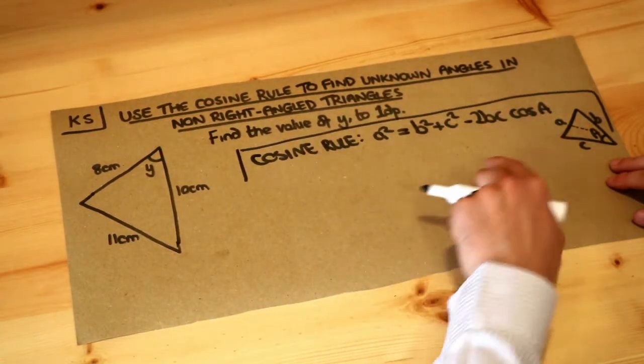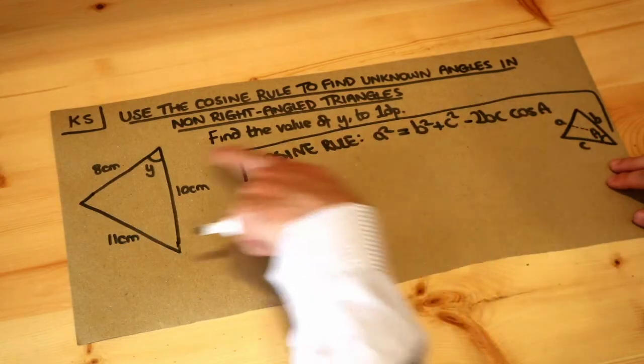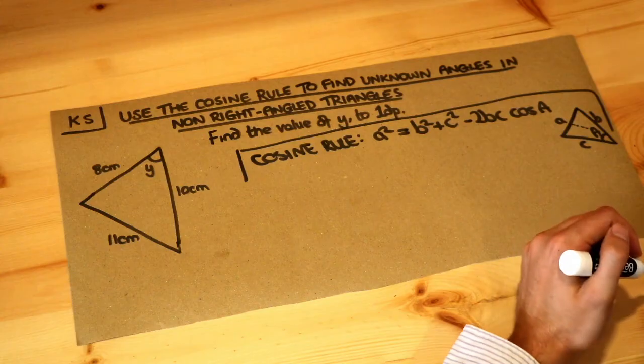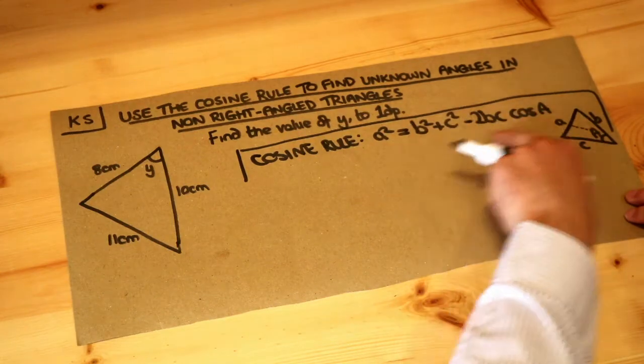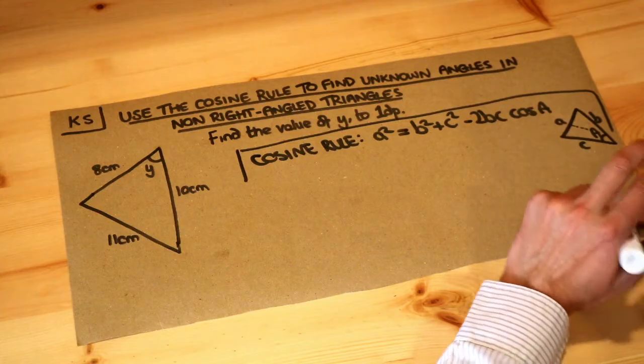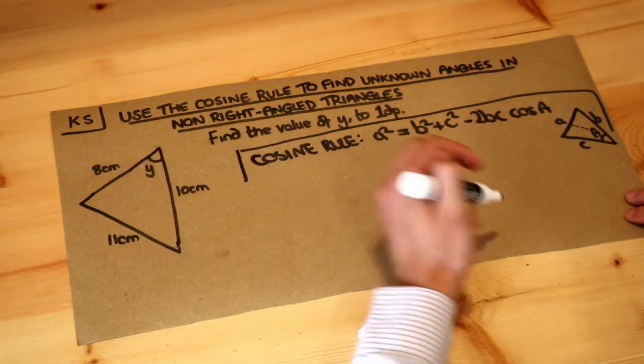This is going to require more manipulation because the cos of A, the angle here that we're trying to find, is sort of stuck inside the equation and we would have to manipulate it. Now actually we could rearrange this formula in order to get cos of A on its own and that makes it easier to find out what the angle is.